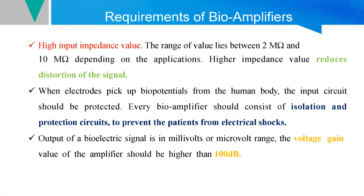Another very important requirement is that the bioamplifier should have an isolation and protection circuit, because the input is the patient. The amplifier must be designed so that it does not give any electrical shocks to the patient. If there is any improper functioning of the amplifier, it could revert back and affect the patient's body. Additionally, the output voltage gain should be very high — greater than 100 decibels.